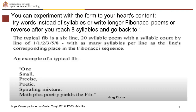You can experiment with the form to your heart's content — try words instead of syllables, write longer Fibonacci poems, or reverse after you reach eight syllables and go back to one. The typical Fib is a six-line, 20-syllable poem with a syllable count of one, one, two, three, five, eight. An example of a typical Fib was written by Greg Pincus: 'One. Small. Precise. Poetic. Spiralling mixture. Math plus poetry yields the Fib.' A typical Fib can deal with any topic.